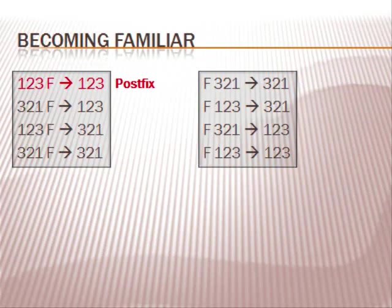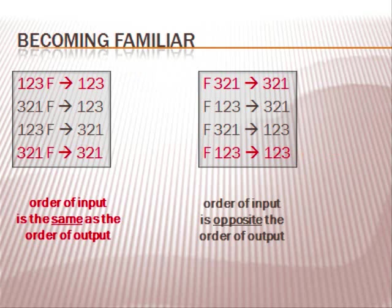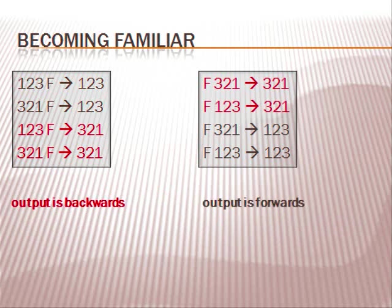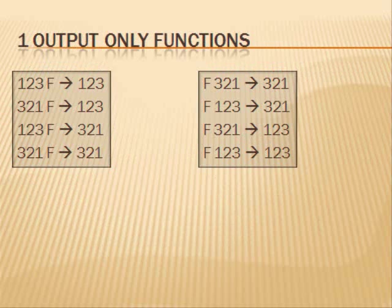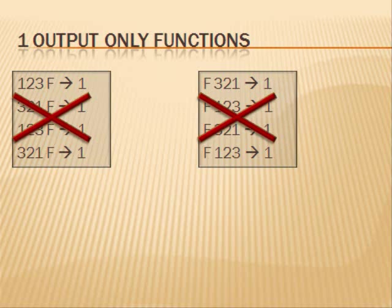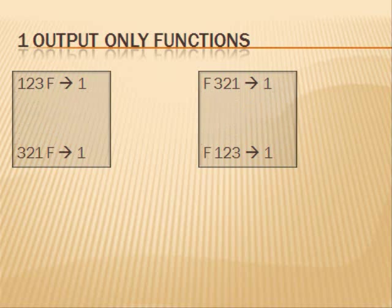Again, this is postfix. This is prefix. The red forms have the order of input the same as the order of output. The red forms have the function made known after the input. The red forms have a backwards order of output. The red forms have a backwards order of input. If we always use functions that produce one output, then we do not need to worry about the forms that are crossed off — they are redundant.